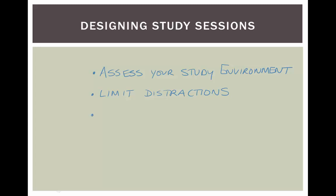Another part of designing your study sessions is establishing the goals and outcomes you want for these sessions. Write down your goals. When studying for the chemistry class, for example, you can have a goal to read the chapter and take notes for the first two hours, and then spend your third hour solving practice problems at the end of the chapter. To stay on track for this study session, you'll have to check in with yourself to see if you're completing what you need.